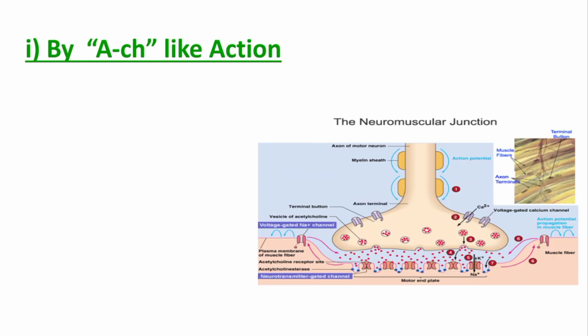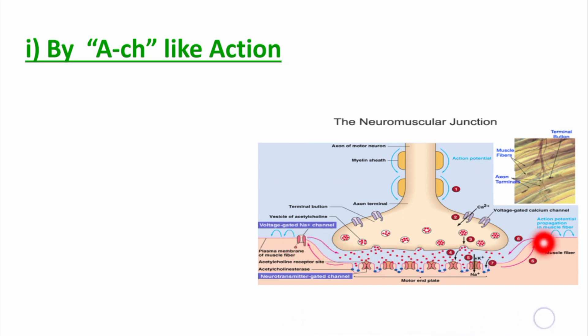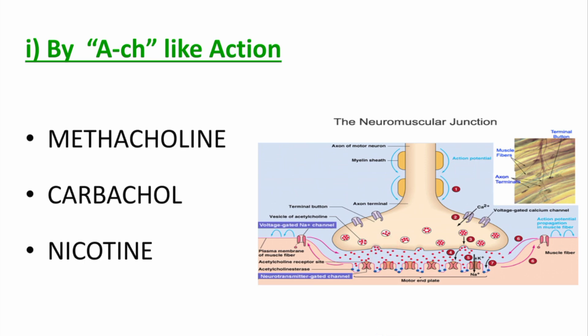The drugs which have acetylcholine-like action work as follows: normally from the axon terminal, the acetylcholine neurotransmitter is released and it acts on the sarcolemma where acetylcholine receptors are present, causing neuromuscular transmission. Drugs like nicotine, methacholine, and carbachol mimic the actions of acetylcholine, bind with its receptors, and in this way increase the neuromuscular transmission.